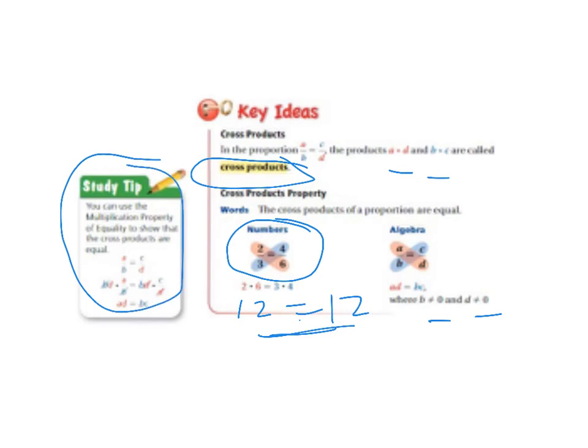It says you can use the multiplication property of equality to show that the cross products are equal. It shows you all this nice math that proves it for you. So you can write that all in your notebook.